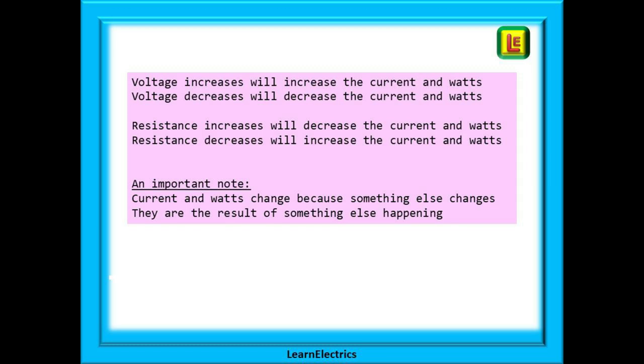An important note: current and watts will change only if something else changes. They are the result of something else happening. Current or watts can never change the voltage or resistance.